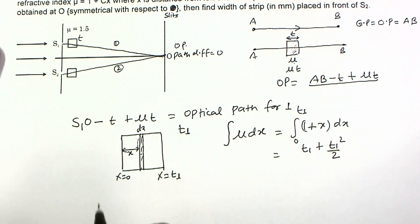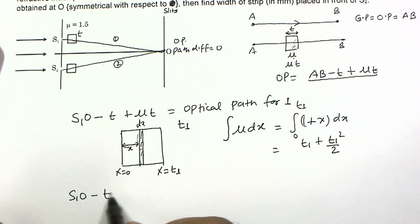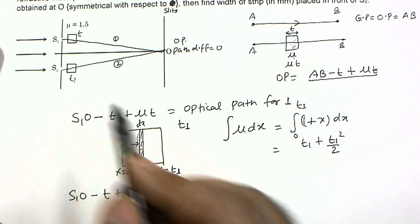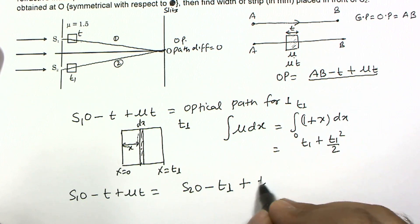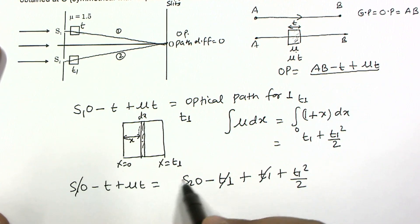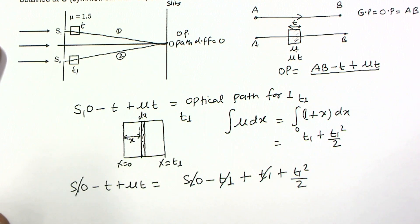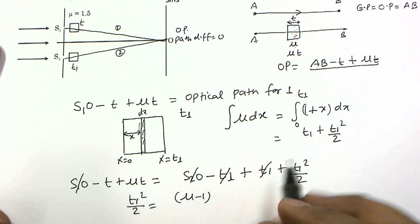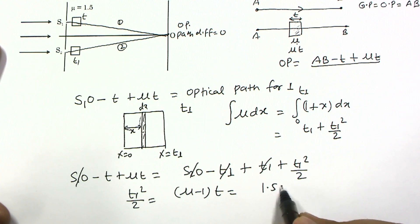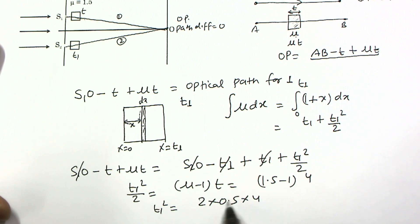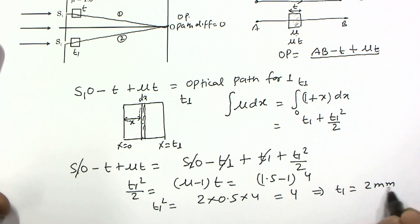Setting the two optical paths equal and noting that S1O and S2O cancel (since O is on the perpendicular bisector), we get: T1 plus T1 squared by 2 equals (μ minus 1) times T, which is (1.5 minus 1) times 4, equal to 0.5 times 4 equals 2. Solving gives T1 squared equals 4, so T1 equals 2 mm. This is the final answer.